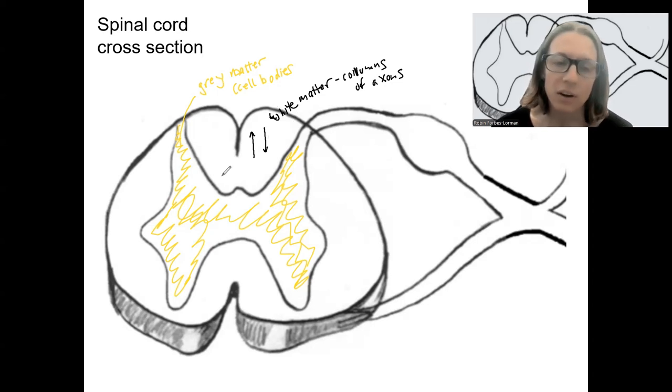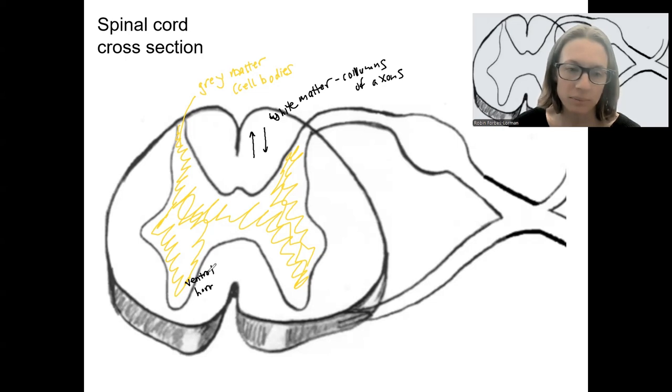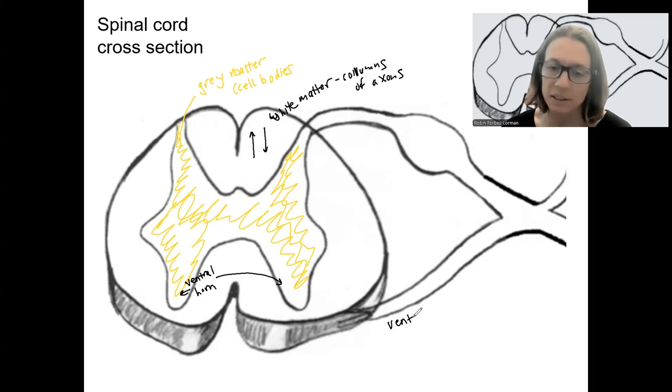Let's focus here on the gray matter. So you can see there's different horns, as these are called. This one is at the front of the body, so it's called the ventral or anterior horn. The information from that ventral horn is going to leave out the ventral root. So this is also the ventral horn here. The root is actually part of the peripheral nervous system, technically.